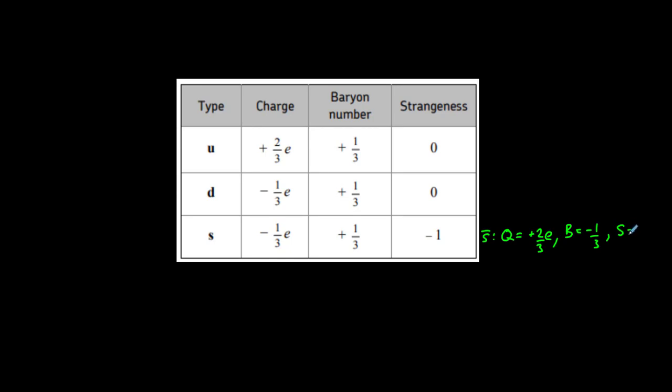All baryons are made of three quarks. For example, a proton is made of two up quarks and one down quark, UUD. From this, we can deduce its properties.